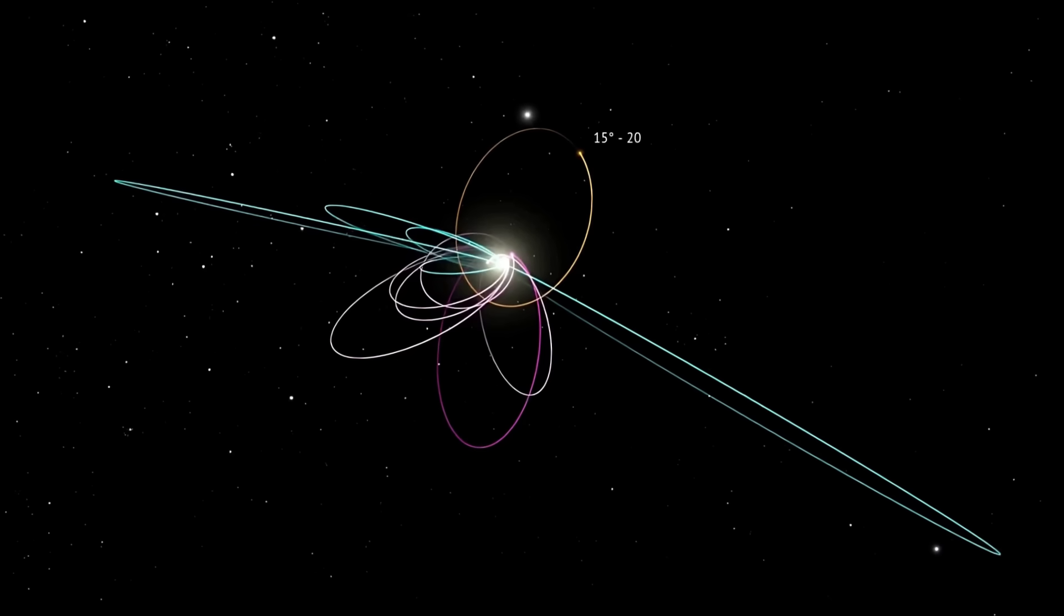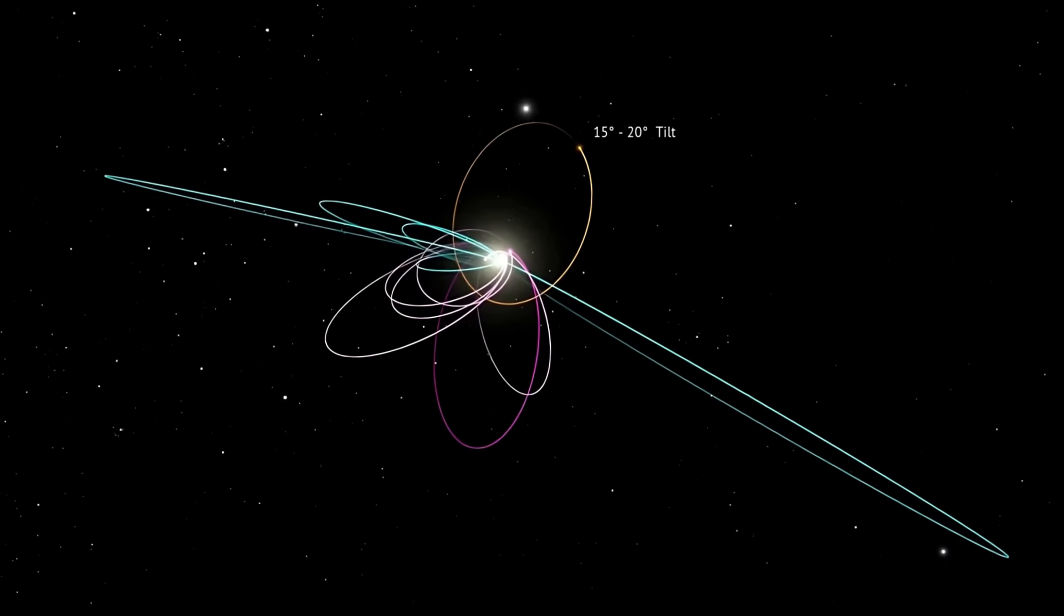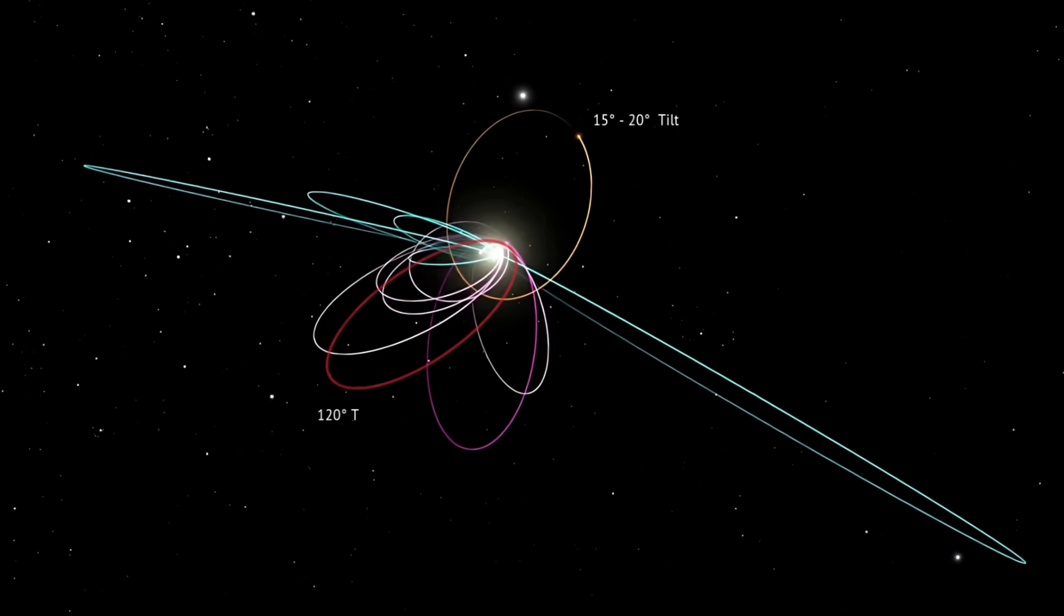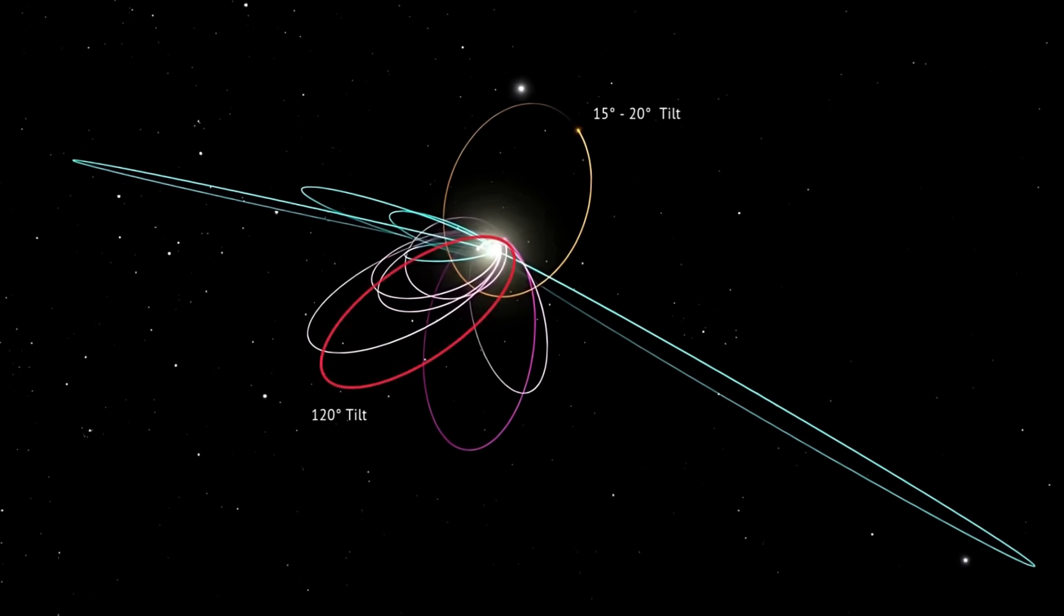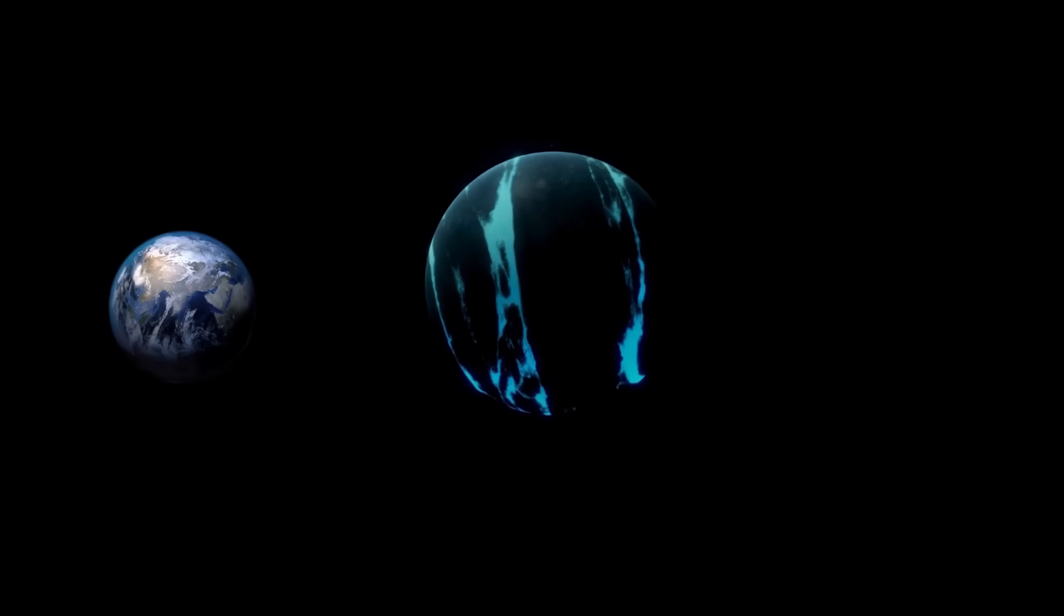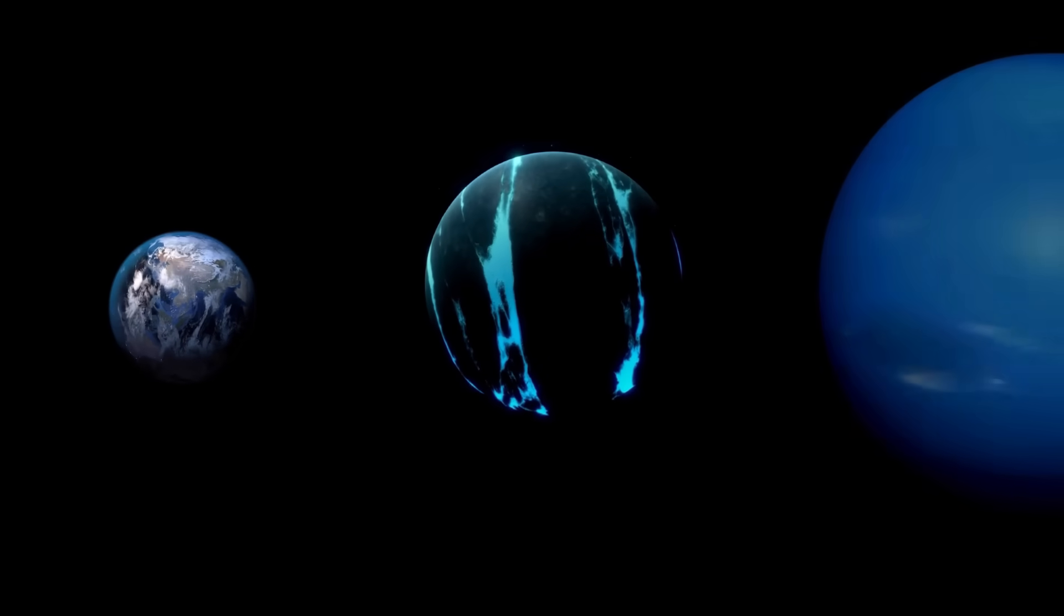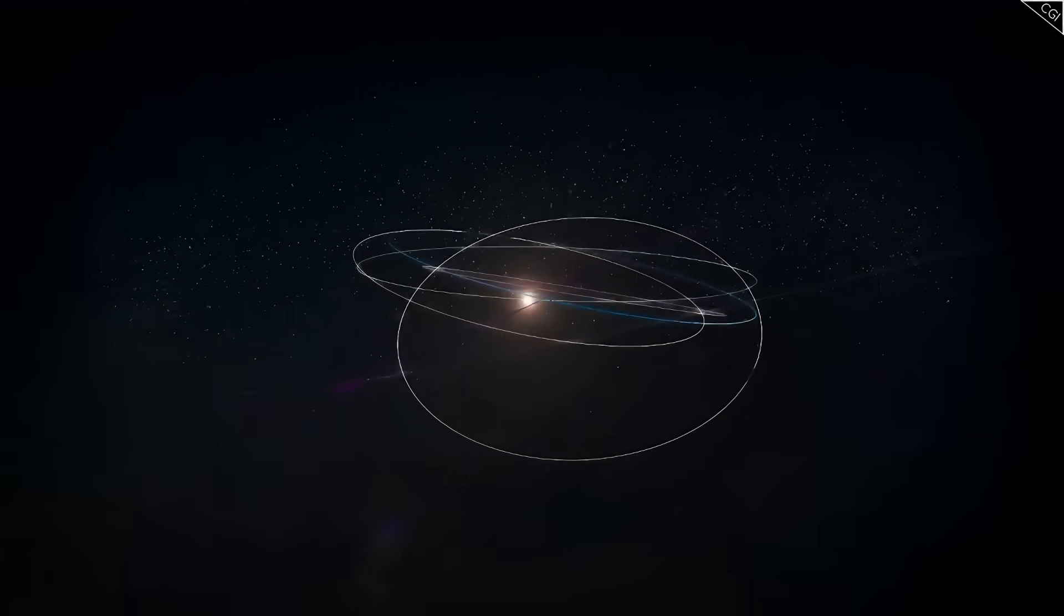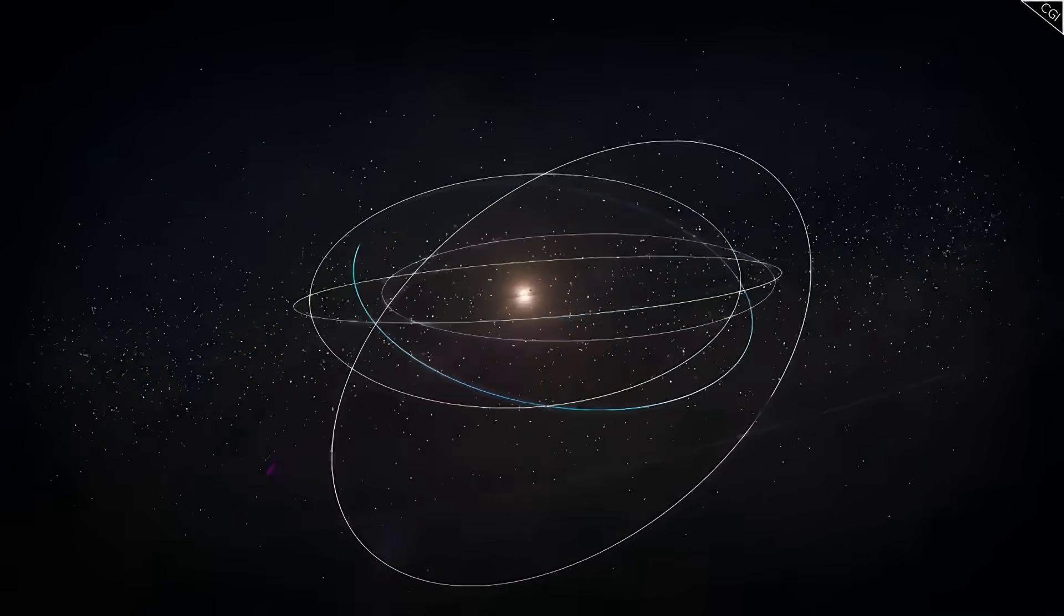Planet 9, as predicted, should have an orbit tilted about 15 to 20 degrees from the plane of the solar system. This new object's tilt looks more like 120 degrees. That means it's not just tilted. It's orbiting in the opposite direction from most planets. In Brown's words, that doesn't mean it's not there, but it means it's not Planet 9.